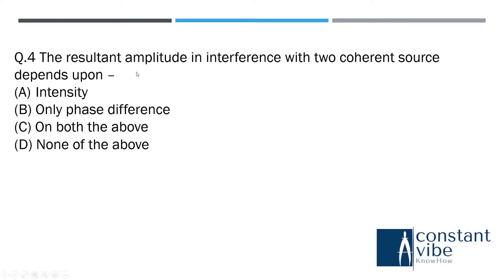Fourth question is: the resultant amplitude in the interference with two coherent sources depends upon both of the above, that means intensity and phase difference. Amplitude depends upon the intensity and phase difference.